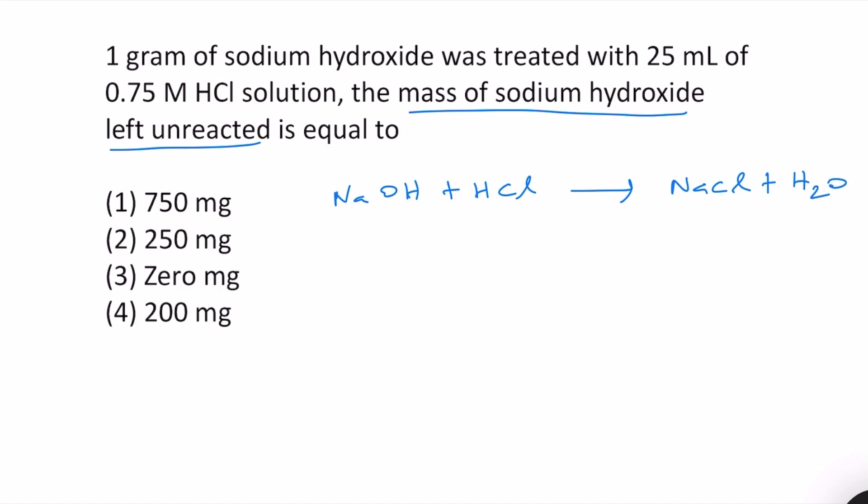We do not need to balance the equation. The stoichiometry is 1 to 1 on the reactant side, 1 to 1 on the product side. And we already know that the limiting reagent here is HCl.